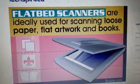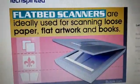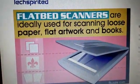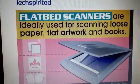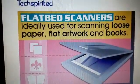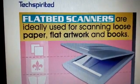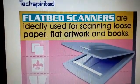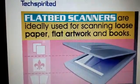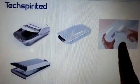We will start with input devices. First, scanners — based on their uses, there are two types: one is the flatbed scanner and another is the barcode scanner. The flatbed scanner is ideally used for scanning loose paper, flat artwork, and books. You can see four pictures on your screen — one is a barcode scanner and three are flatbed scanners.